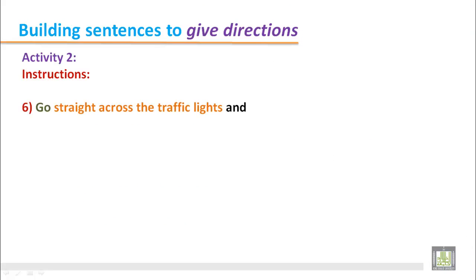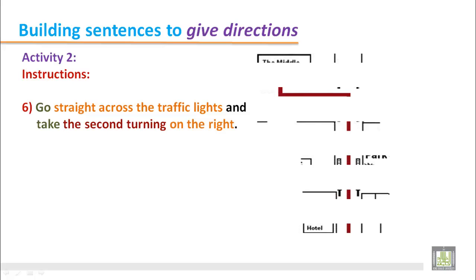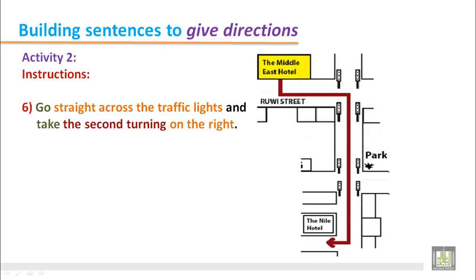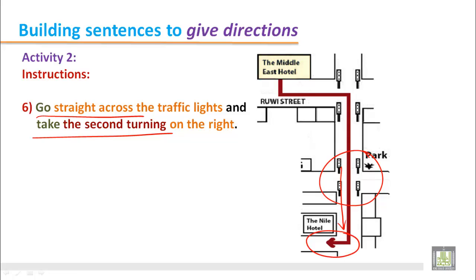Number 6. Go straight across the traffic lights and take the second turning on the right. In the picture we can see this is the second traffic light, and then after you have to go straight across. You should not stop anywhere. Go straight across and then take the second turning on the right. You can see you are going to take the second turning on your right.